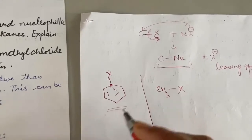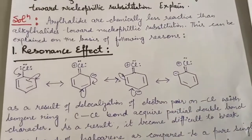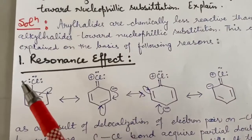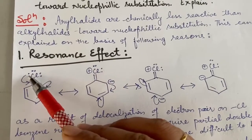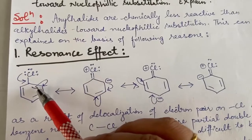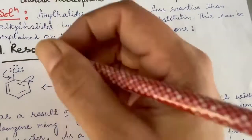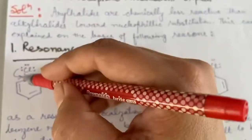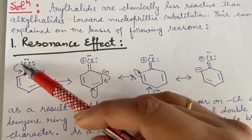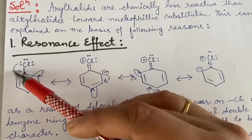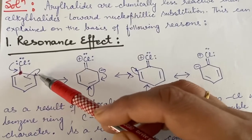The first factor is the resonance effect. In resonance, we see that the lone pairs on the halogen — we know halogen has three lone pairs of electrons — can undergo delocalization with the benzene ring. As soon as this lone pair shifts to the adjacent carbon, that carbon would have 1, 2, 3, and 4 bonds plus the new pair, making 5 bonds, which is not possible for carbon. So that carbon pushes its pi bond electrons to the next carbon.